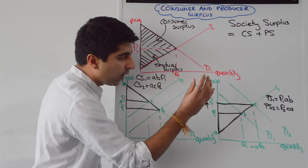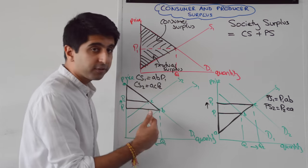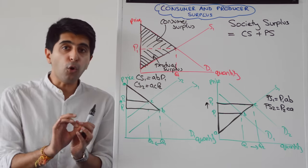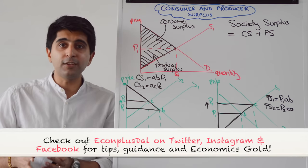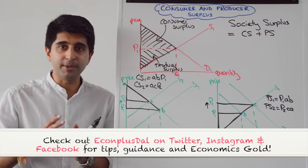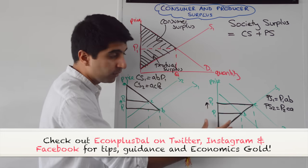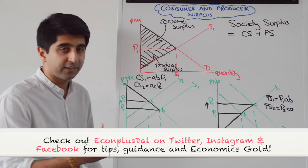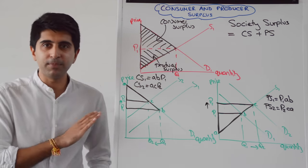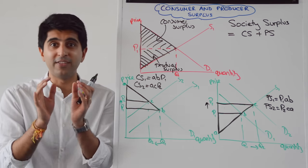Producer surplus increases when there's a higher price — you can show it on a diagram like this. Remember that consumer and producer surplus are normally triangles, but in some cases they can be trapeziums. If you learn these tools, you'll easily find them. That is consumer surplus and producer surplus — completely nailed. Thank you so much for watching, I'll see you in the next video.